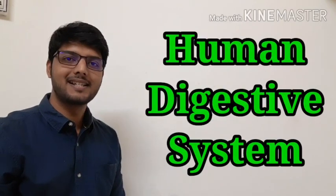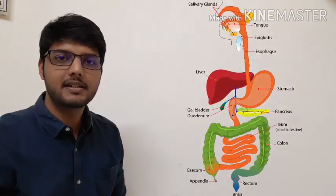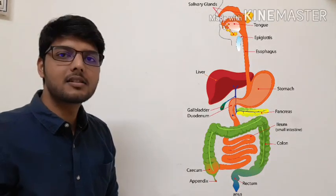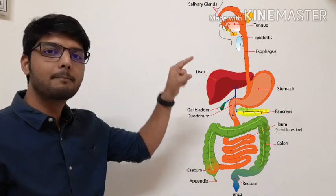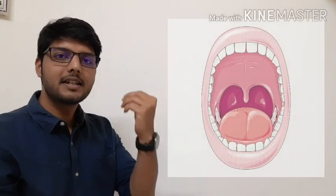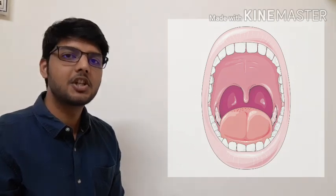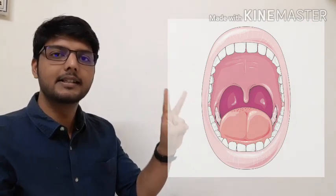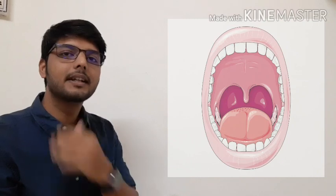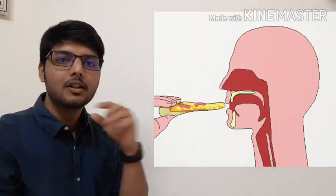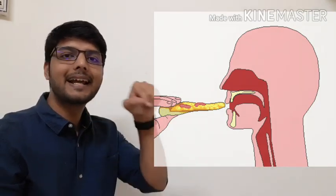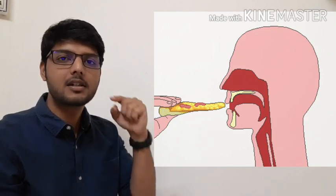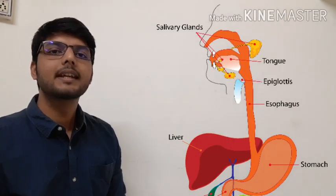Now we will see the human digestive system. The first part starts from the mouth. In the mouth, we take food in and then chew it. In the mouth, three things are present: first is teeth, second is the tongue, and third is the salivary gland. The teeth cut and grind the food, the salivary gland secretes saliva into that food, and the tongue mixes it. After swallowing, this food moves to the esophagus.